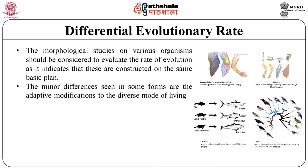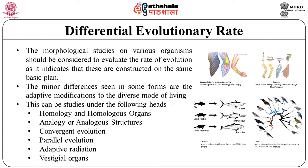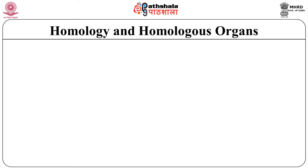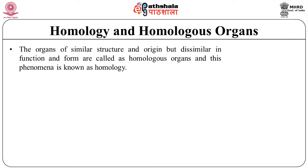The minor differences seen in some forms are adaptive modifications to diverse modes of living. This can be studied under the following headings: homology and homologous organs, analogy or analogous structures, convergent evolution, parallel evolution, and adaptive radiation or vestigial organs. Let us understand them one by one.